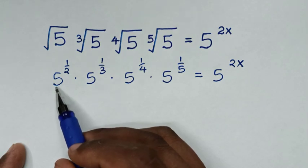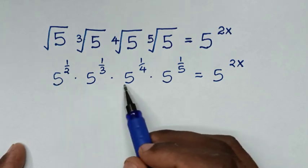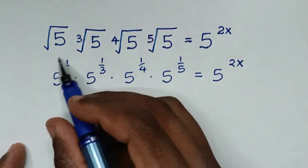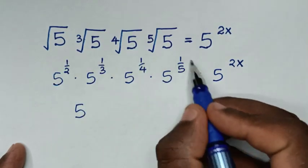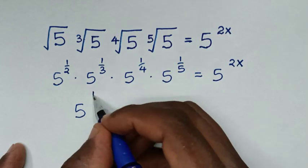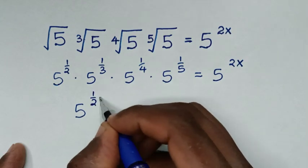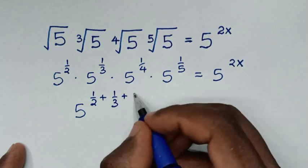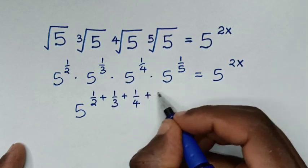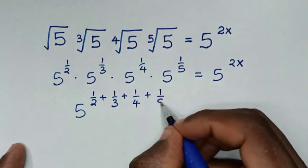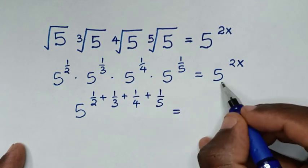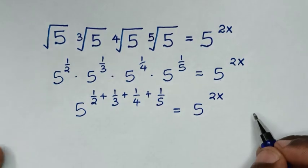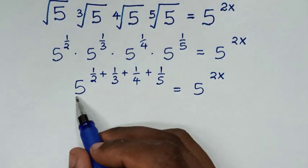In the next step, on the left side we have multiplication of exponents with the same base of 5, so it will be base 5 and we add these powers of fractions: 1/2 plus 1/3 plus 1/4 plus 1/5, equals 5 to the power of 2x.